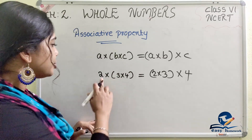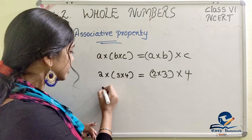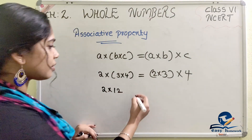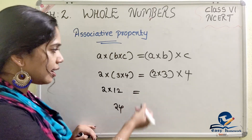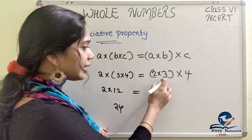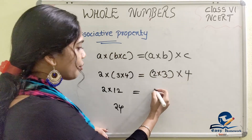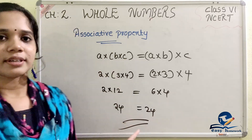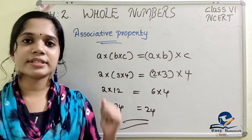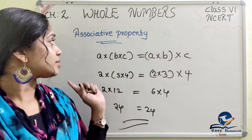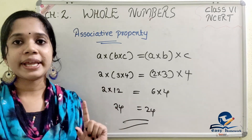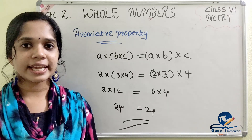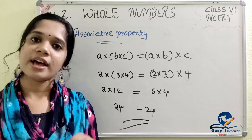Let's check: 2 into (3 into 4) — that is 3 into 4 equals 12, and 2 into 12 equals 24. Then (2 into 3) into 4 — that is 2 into 3 equals 6, and 6 into 4 equals 24. The result is the same. The associative property of multiplication is satisfied for whole numbers.